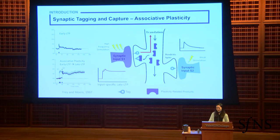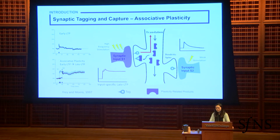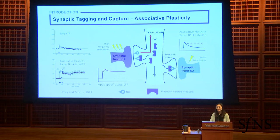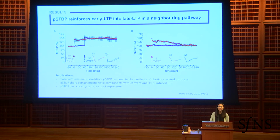When the second synaptic input receives a weaker stimulation that typically just leads to short-term potentiation and local setting of a synaptic tag, because there are now plasticity-related products floating around, these tags could also capture those products and stabilize the local changes. And now the short-term LTP could be transformed into a longer-lasting one.